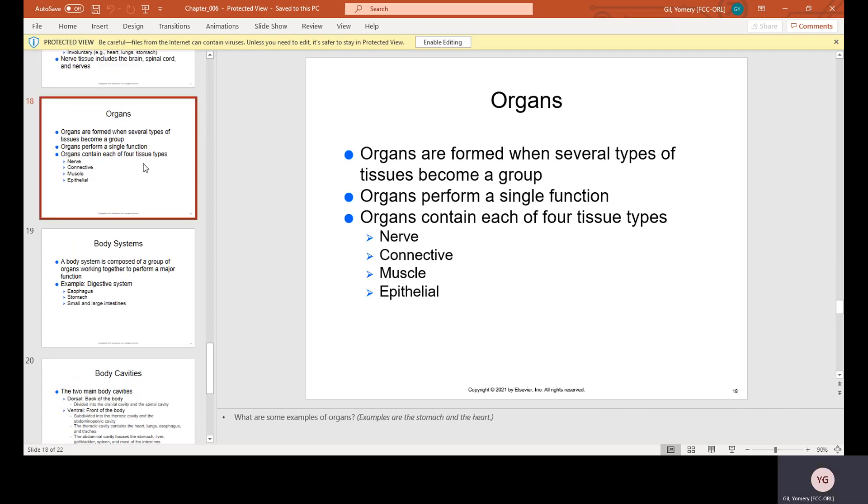Organs are formed when several types of tissues become a group. Organs perform a single function. Organs contain each of the four tissue types: nerve, connective, muscle, or epithelial.